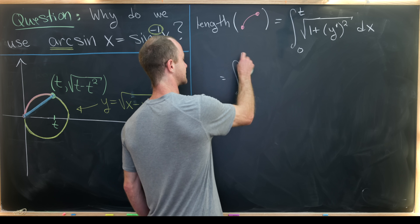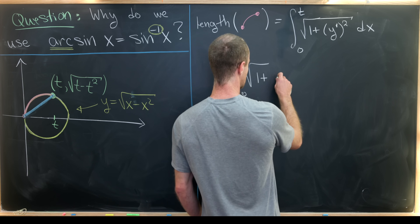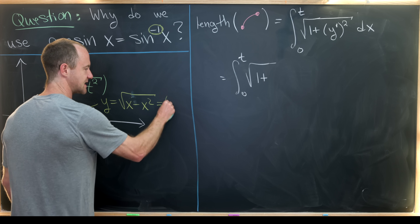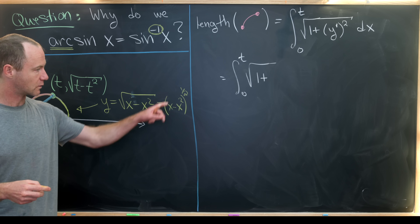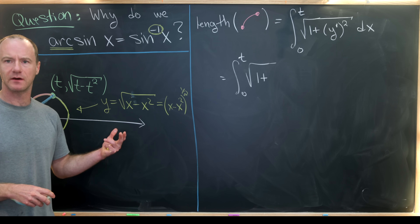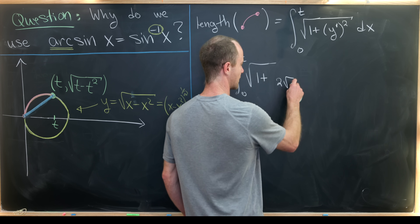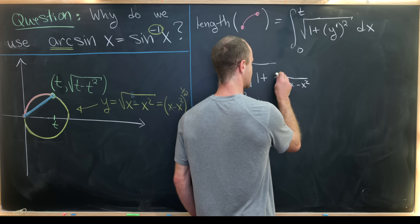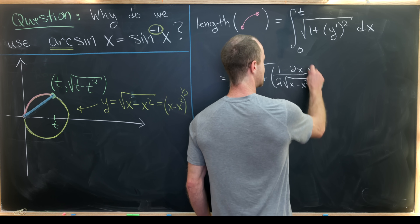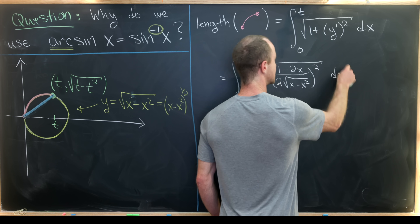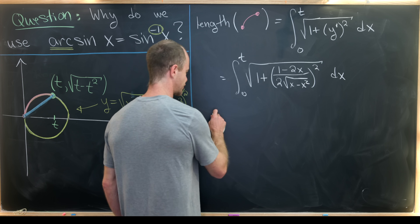This gives us the integral from 0 to t of the square root of 1 plus the derivative squared. Thinking of y as (x - x²)^(1/2), the chain rule gives us (1 - 2x) over (2 * sqrt(x - x²)) in the numerator and denominator respectively. We then square that entire expression as required by the arc length formula.